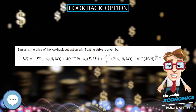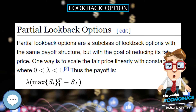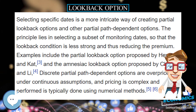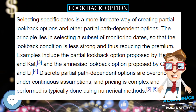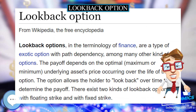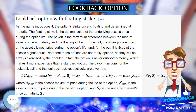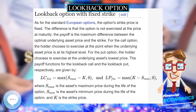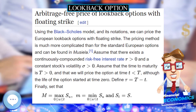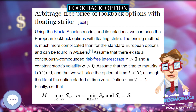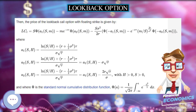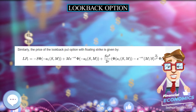Then the price of the lookback call option with floating strike is given by the formula, where phi is the standard normal cumulative distribution function: phi(a) equals (1/sqrt(2*pi)) times the integral from negative infinity to a of e^(-x²/2) dx. Similarly, the price of the lookback put option with floating strike is given by the corresponding formula.